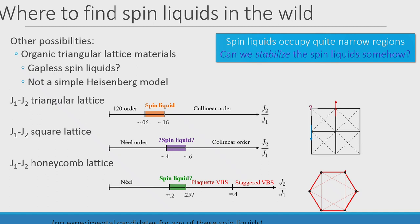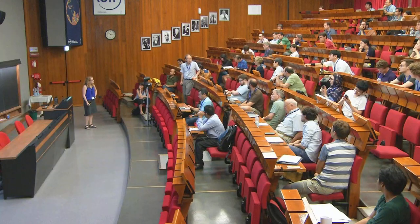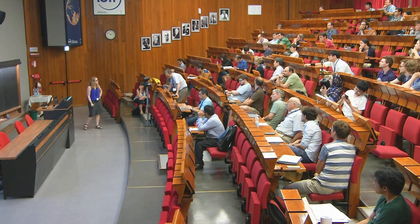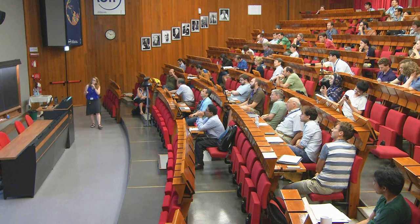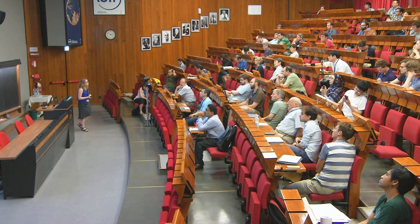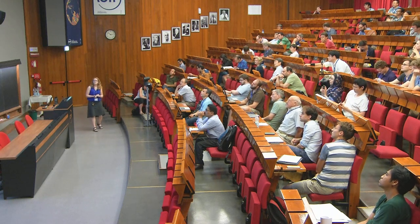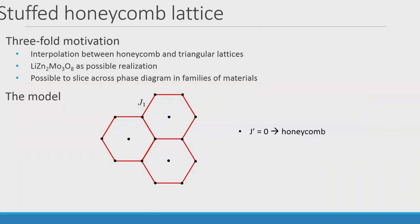This question has led us to introduce the stuffed honeycomb lattice. There's a threefold motivation: a material LiZn2Mo3O8, the possibility of engineering it in different ways, and pure theoretical interest as a way to interpolate between the honeycomb, triangular, and dice lattices while keeping hexagonal symmetry. It's a way of taking your triangular lattice and making it anisotropic differently than seen in organic triangular lattice materials. The initial motivation was: we see a clear spin liquid on the triangular lattice, there might be one on the honeycomb, and maybe turning on these J-prime couplings enlarges the spin liquid region.